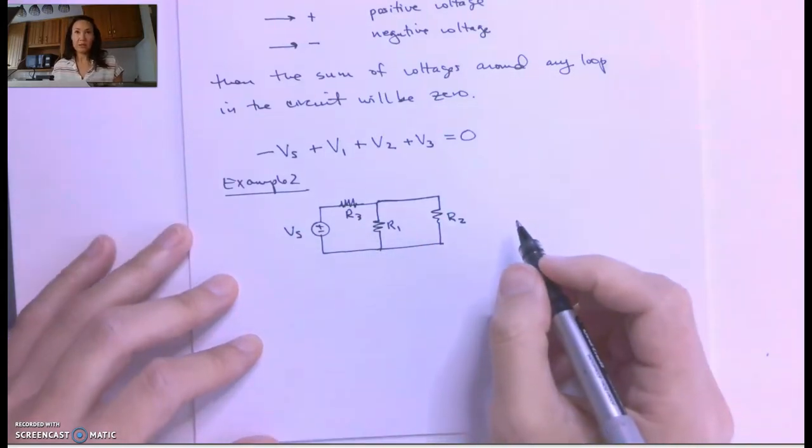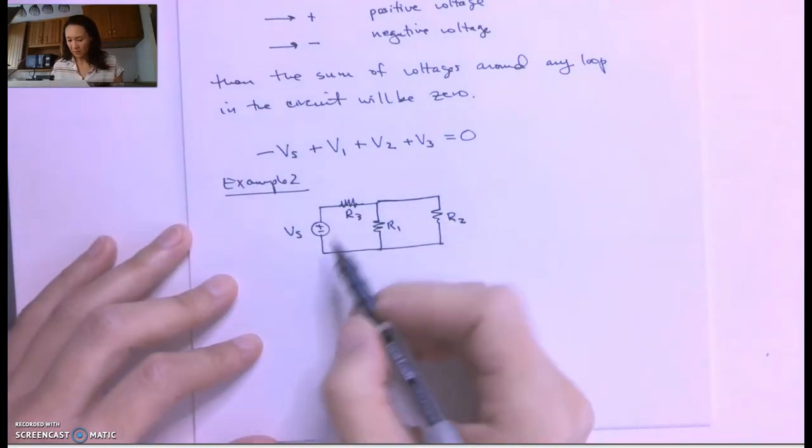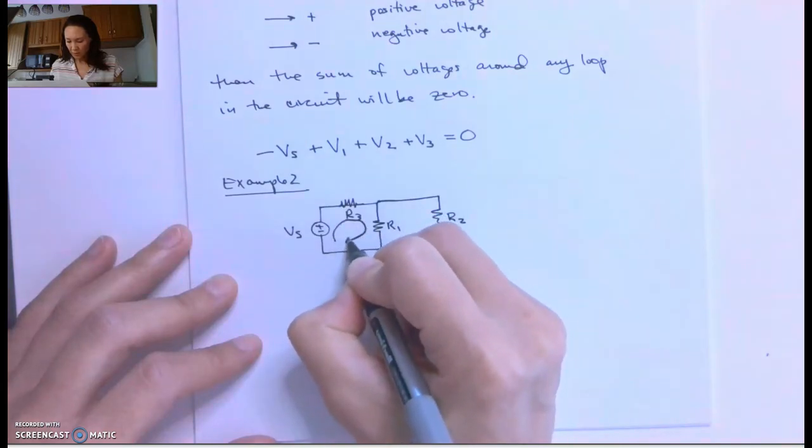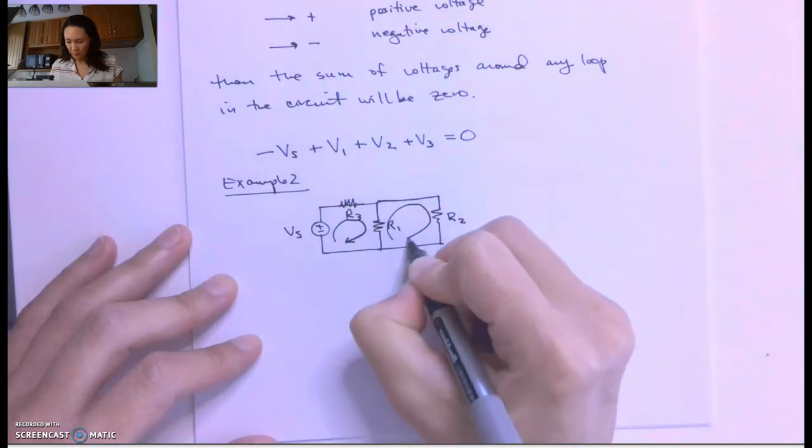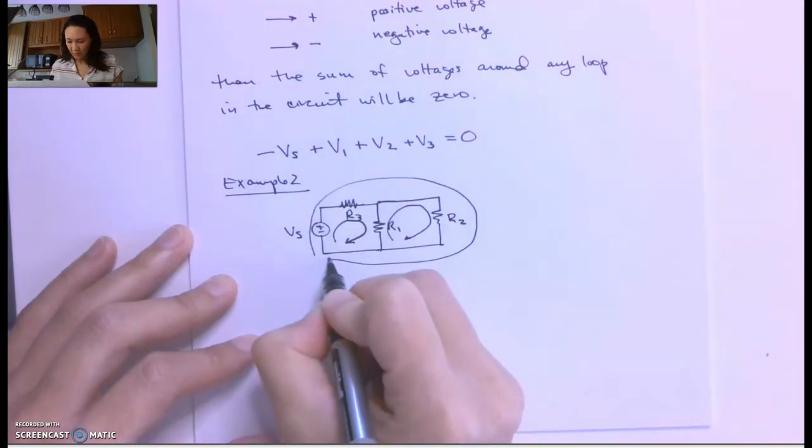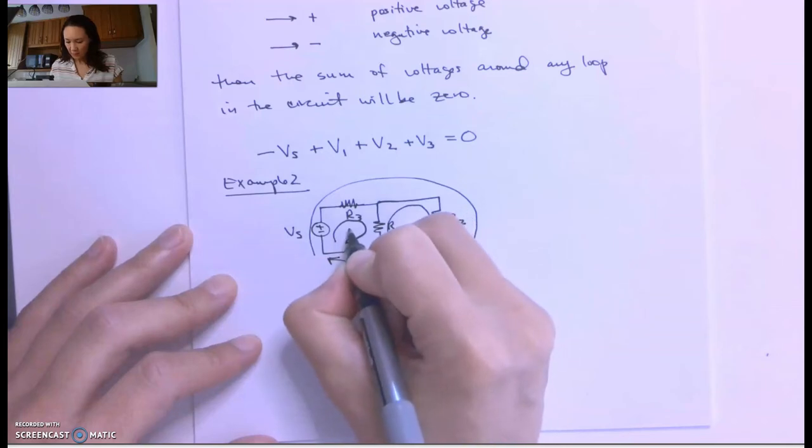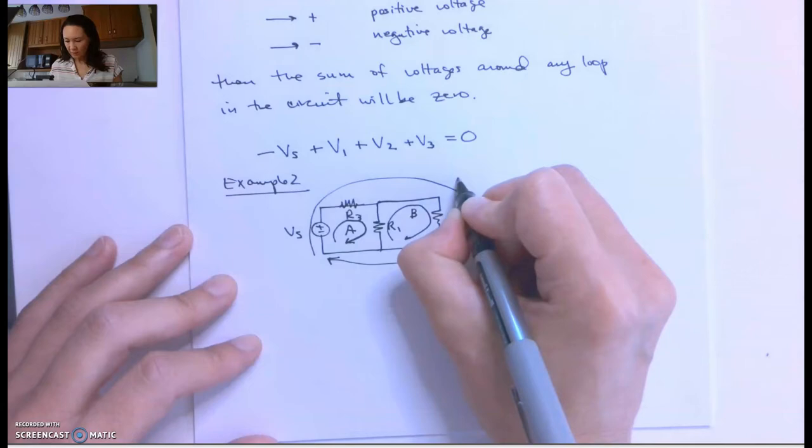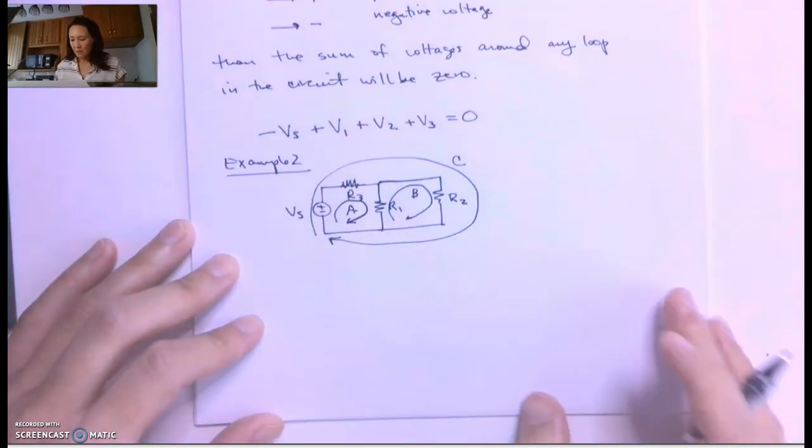So I'm going to start at any point in the circuit. I can start here. There's going to be a loop here, a loop here, and an outer loop here. So I'll name these loops. I'll call this loop A, I'll call this loop B, and I'll call my outer loop loop C.